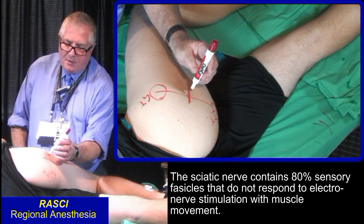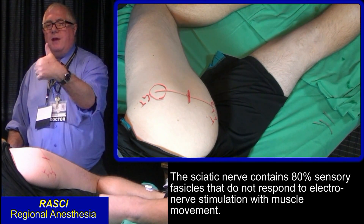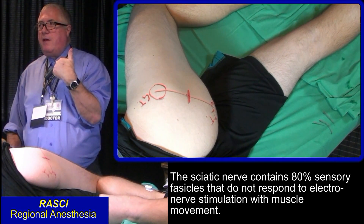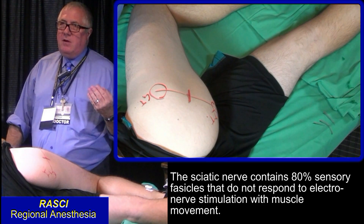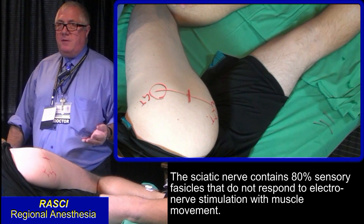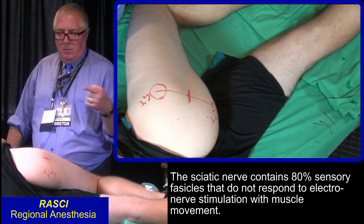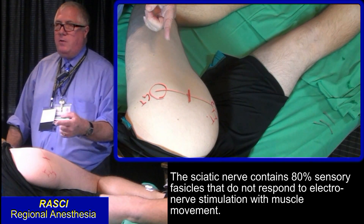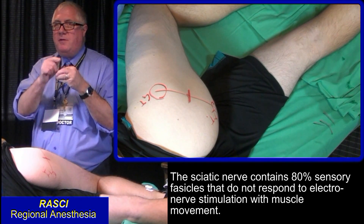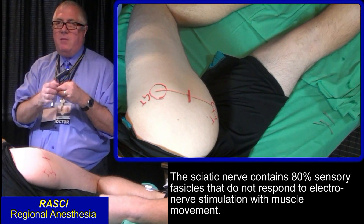If you're going to use a nerve stimulator technique, you can insert your needle straight there. You're aiming at a nerve something about the size of my thumb. The sciatic nerve is dominantly sensory — about 80% sensory and only 20% motor. So it's not unusual, wherever you do this block, to prod the nerve with your needle and not get a twitch, because you're just stimulating sensory fascicles. You've got to keep exploring or penetrating until you find a motor fascicle.